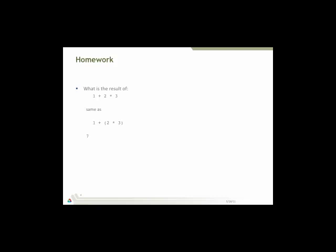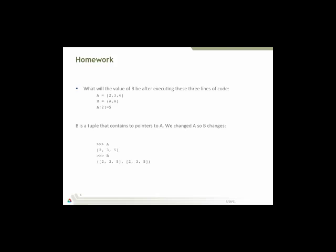So multiplication takes place before addition. So it's two times three plus one, which gives us seven. Next question is what will the value of B be after executing these three lines of code? So we start out with a being [2, 3, 4], and that's a list. We say B is a tuple containing two instances of a.